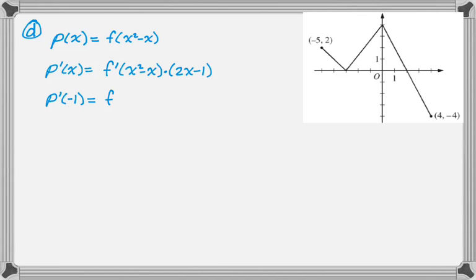And now it's a plugging in problem. So p prime of negative 1 will be f prime of 2 times negative 3. I need f prime of 2, but if you look at the graph of f, it's linear between 0 and 4, and it has a slope of negative 2. So p prime of negative 1 is negative 2 times negative 3, which is 6. And that's the entire question. I hope you found this helpful. Good luck.